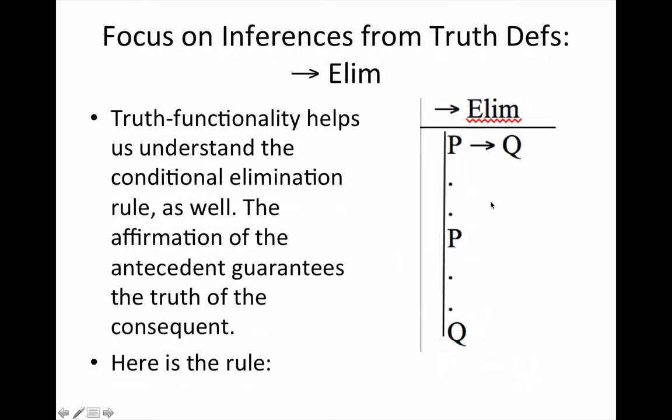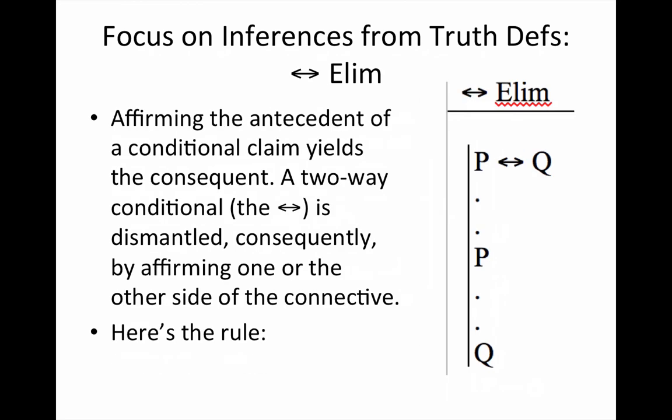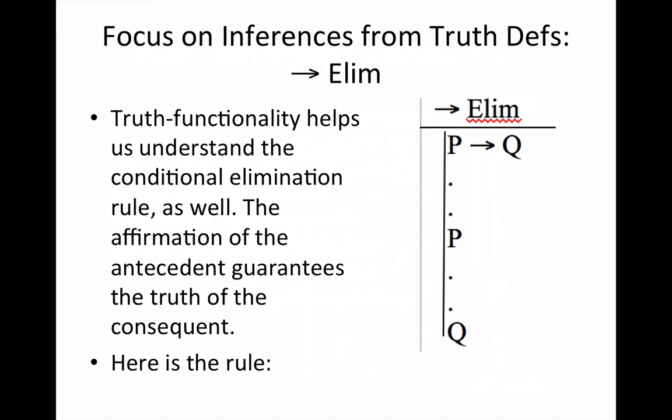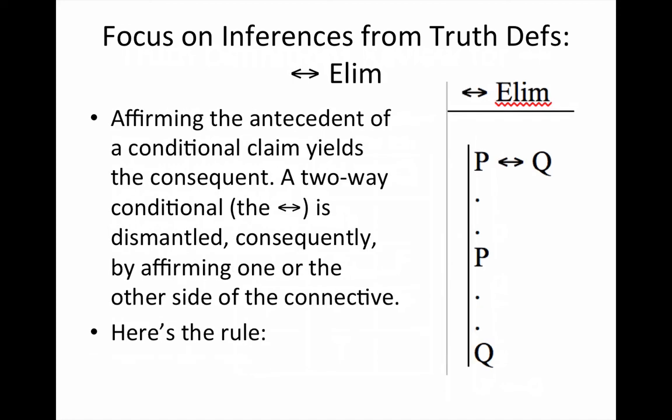by conditional elimination, we have P. The converse also applies. So, remember, the affirmation of the antecedent brings down the consequent, so that when you have a two-way conditional and you have one side, you will have the other and vice versa. So conditional elimination is a two-way conditional elimination.